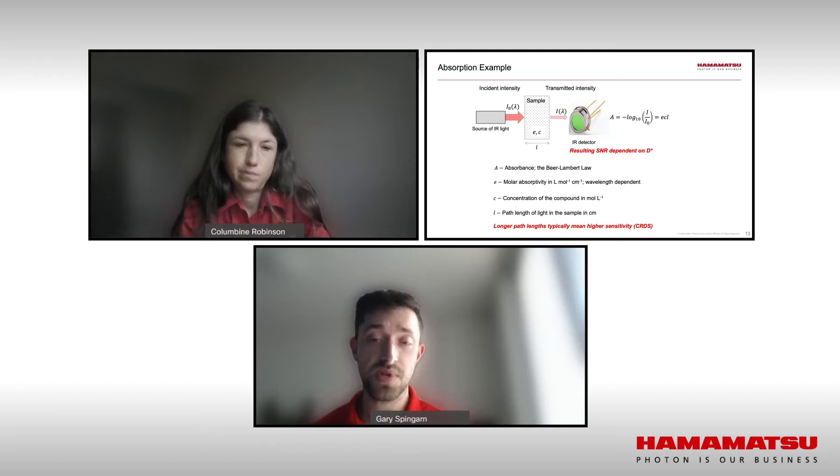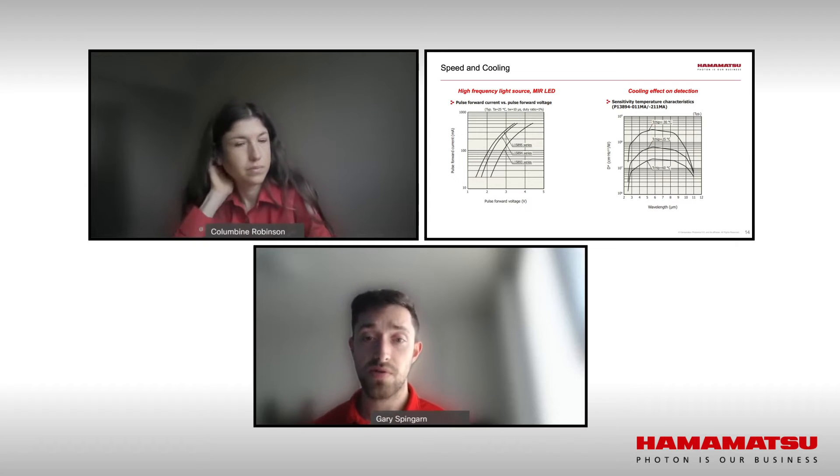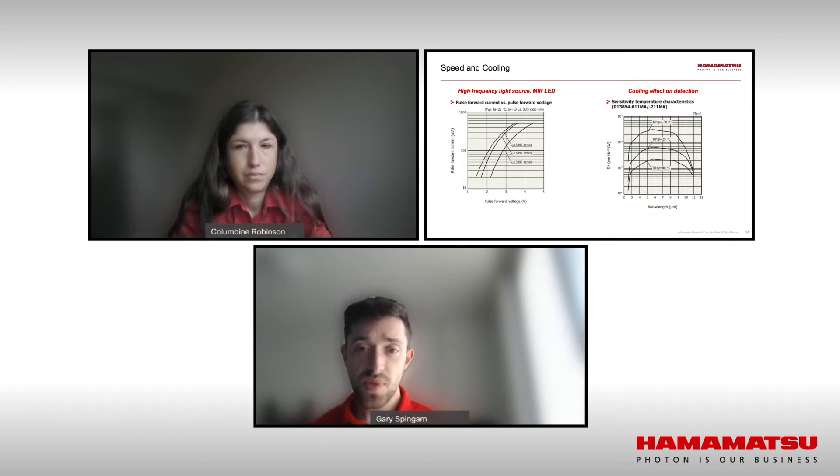Next comes speed. Some detectors simply are going to have a signal drop-off at higher frequencies. The problem here is that some IR light sources are going to operate at high frequency modulation. So if one is using one of these light sources, one needs to choose a detector that can keep pace.